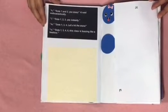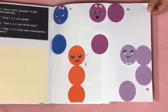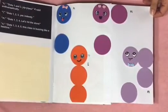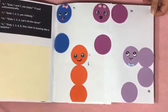K dots one and three. Yip yippee, K said enthusiastically. L dots one, two, three. Yes, indeedy. M dots one, three, four. Let's hit the store. N dots one, three, four, five. This class is buzzing like a beehive. Here is blue Little K with a pink bow, orange Little L, a purple Little M with pink sunglasses, and a lavender Little N with a blue bow tie.